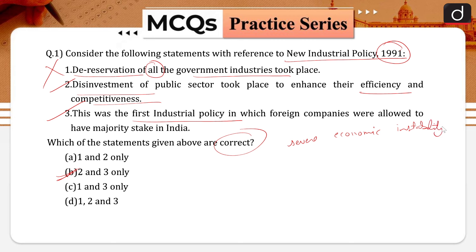The objective of the policy was to raise efficiency and accelerate economic growth. Features of the New Industrial Policy: first, de-reservation of public sector. The sectors that were earlier exclusively reserved for the public sector were reduced. However, the pre-eminent place of the public sector in five core areas — arms and ammunition, atomic energy, mineral oils, rail transport, and mining — was continued.